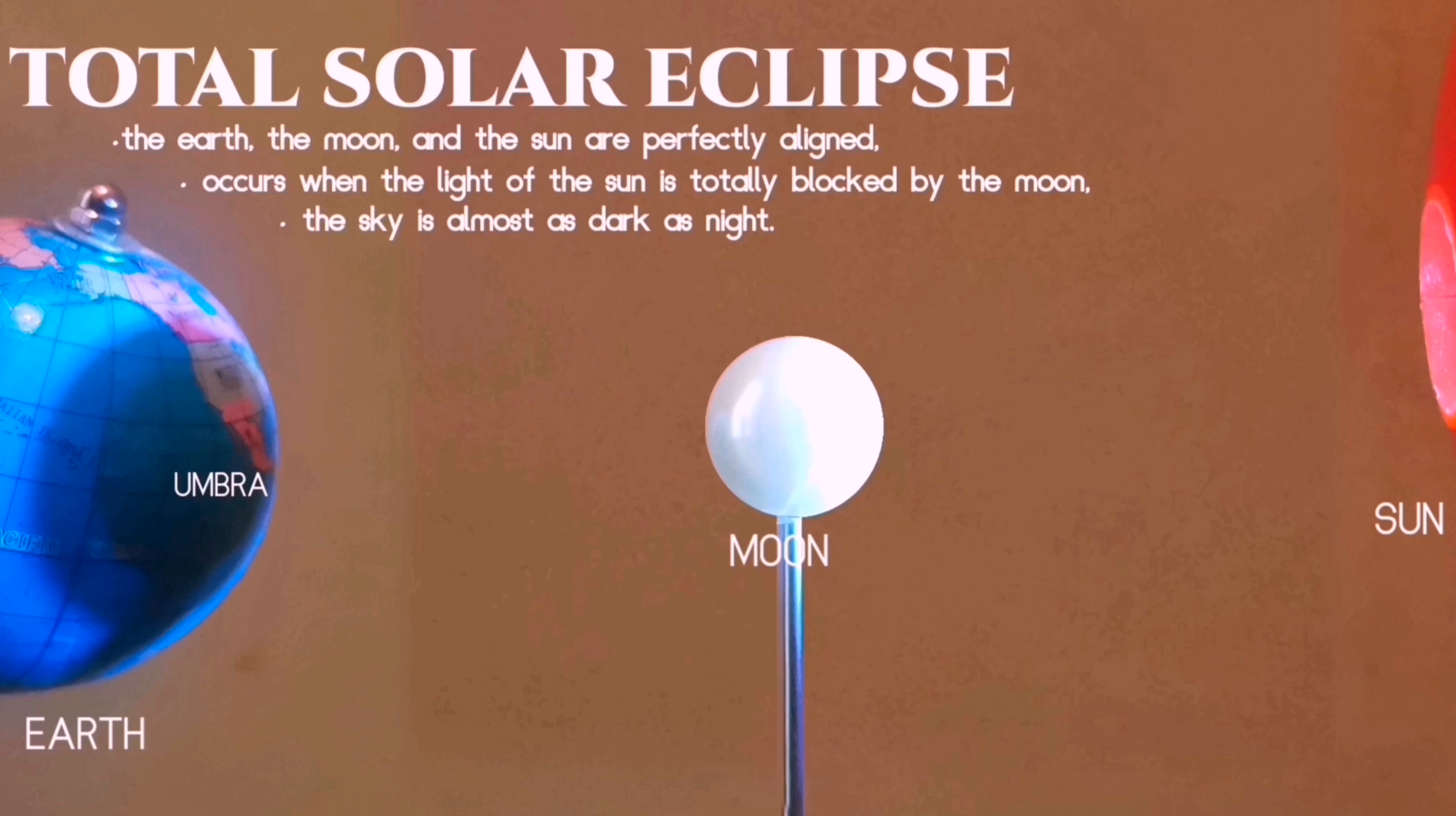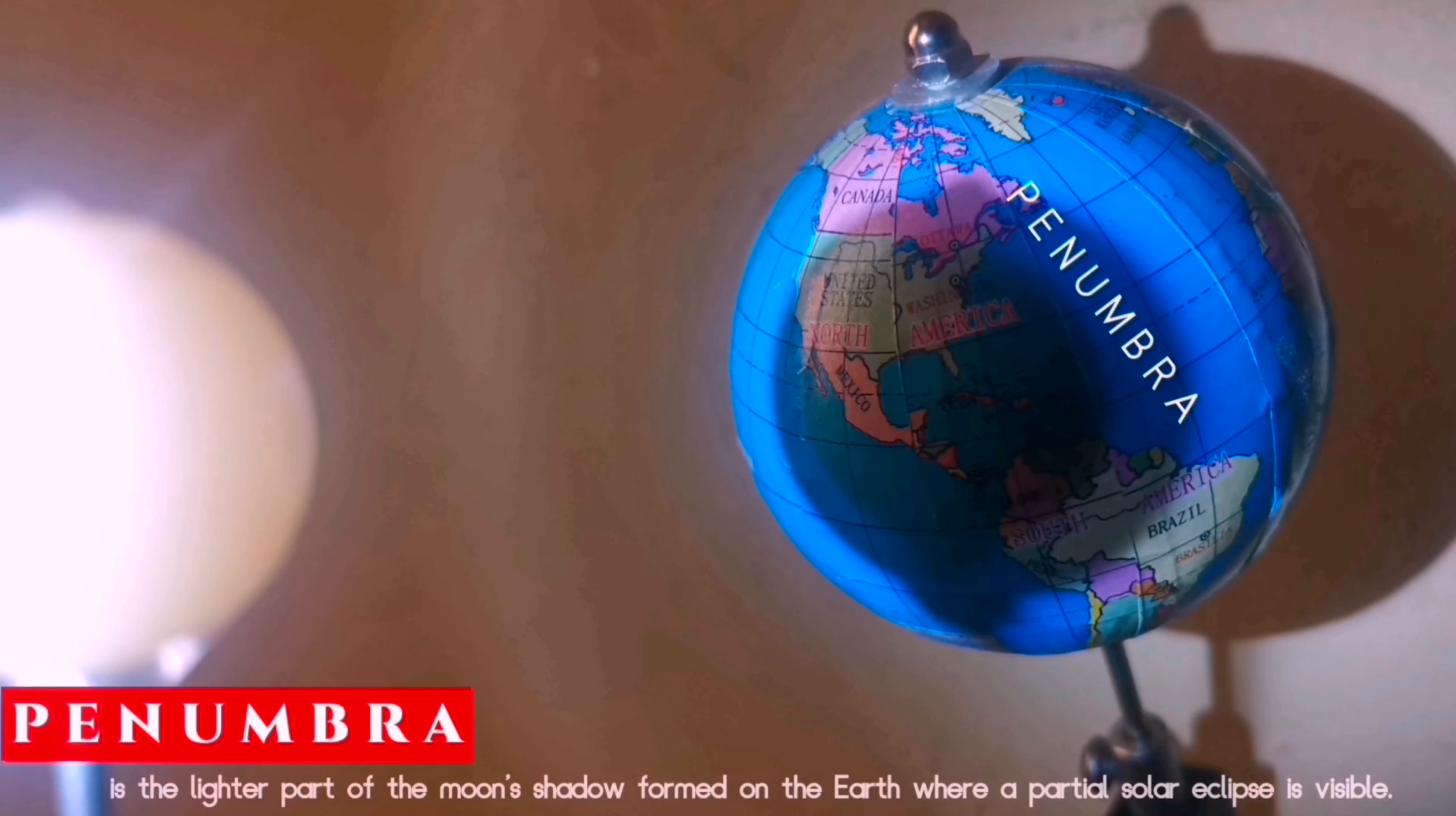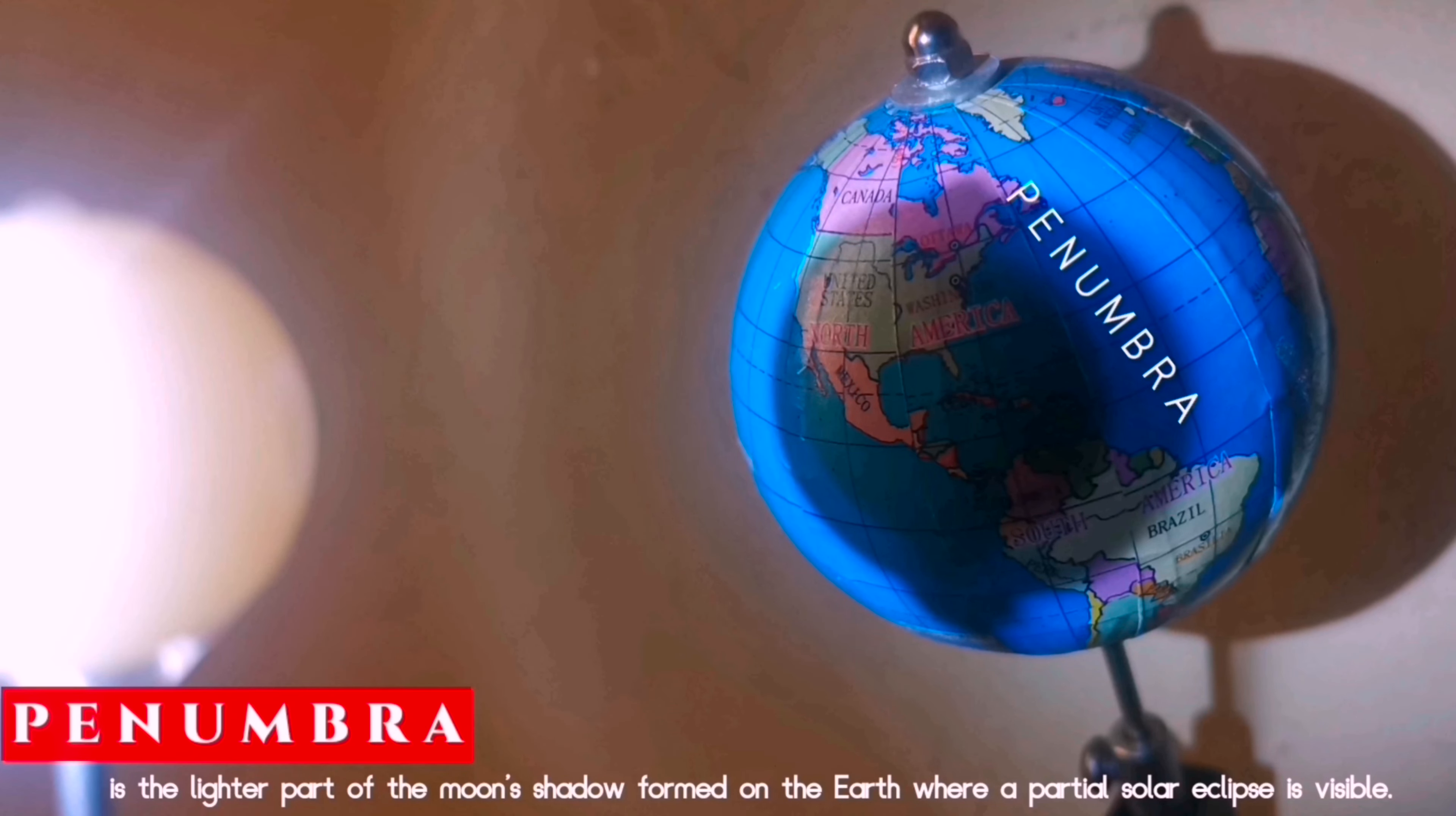Approximately, total solar eclipse occurs once every 18 months and can range from a second to 7.5 minutes.